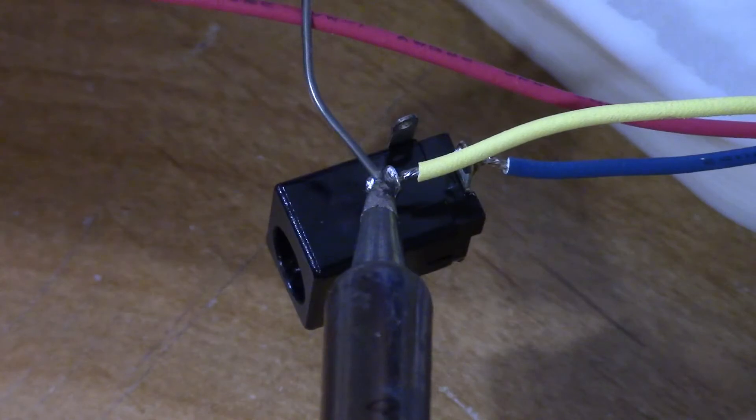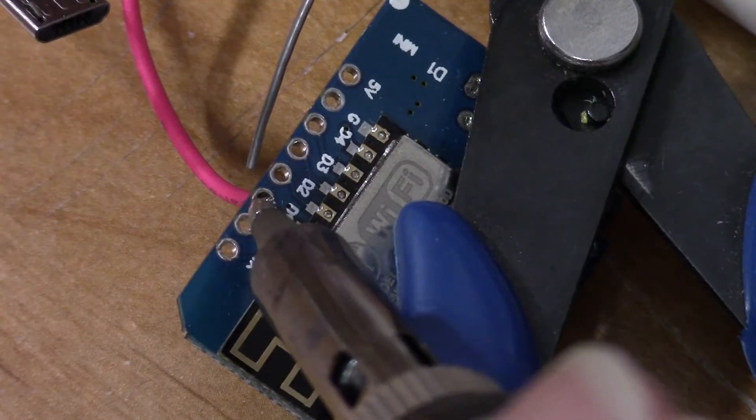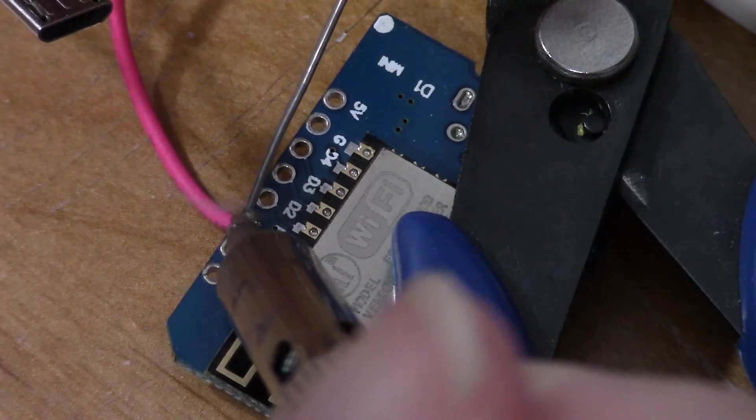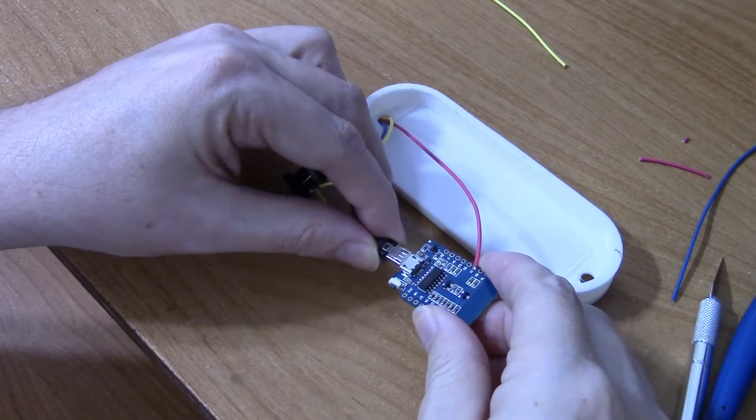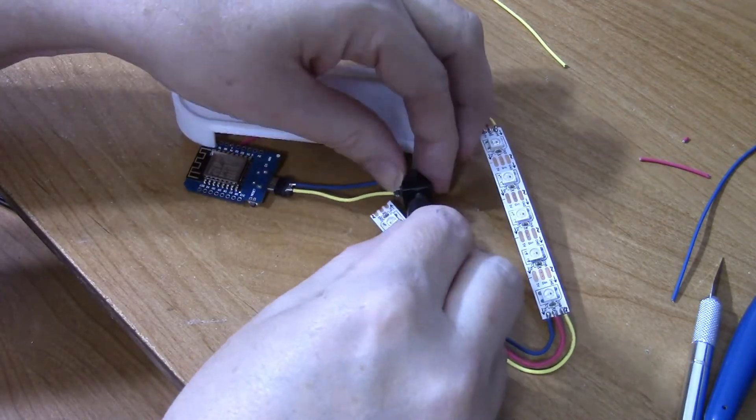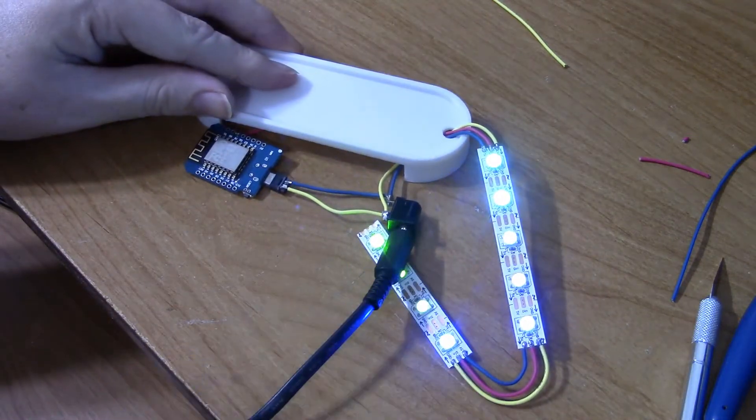Solder all of the power leads to the appropriate connector. Then solder the RGB signal line to port D1. Connect everything for a quick test. And congratulate yourself on a job well done.